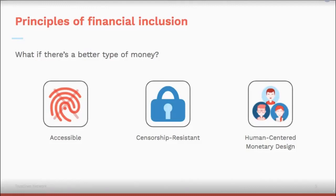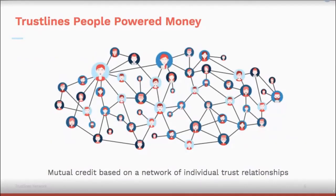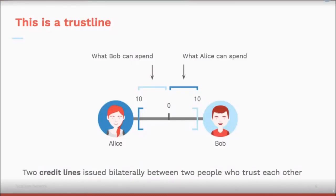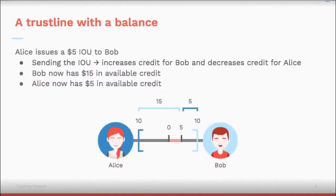This brings us to the Trust Lines concept of people-powered money, which is essentially a mutual credit system based on a network of individual trust relationships. A trust line is two credit lines issued bilaterally between two people who trust each other. Here we have Alice and Bob, who are real friends. Alice says to Bob: I'm willing to loan you $10 anytime you need it. Bob says the same to Alice — they make it mutual, because they really know and trust each other.